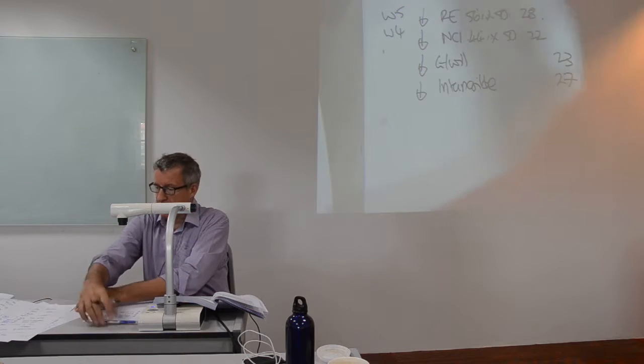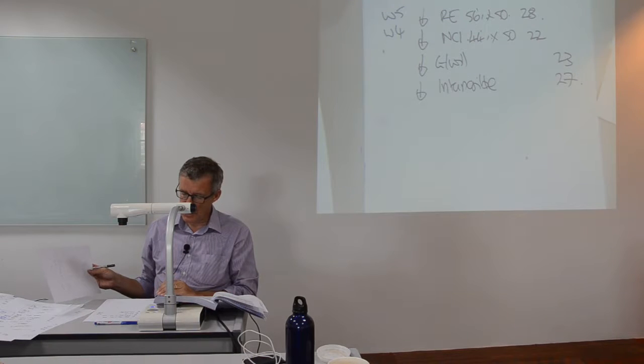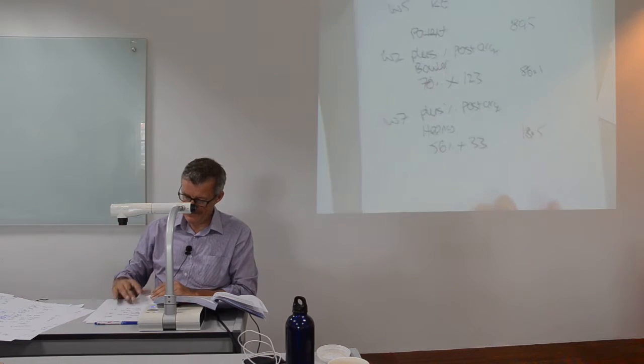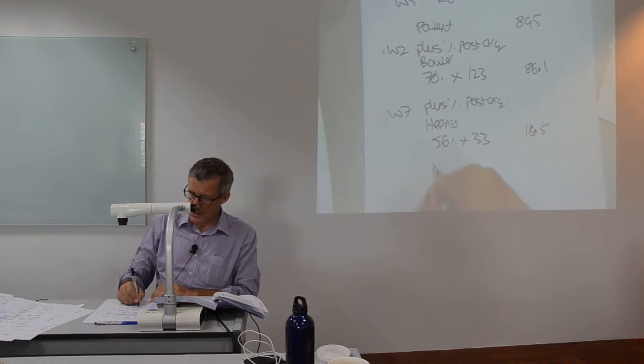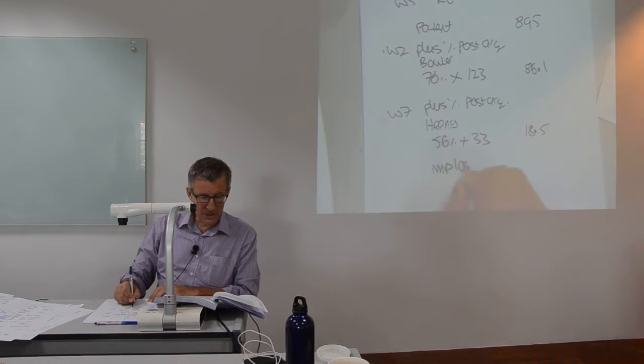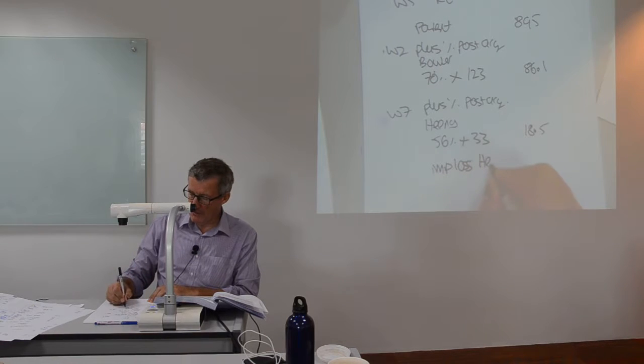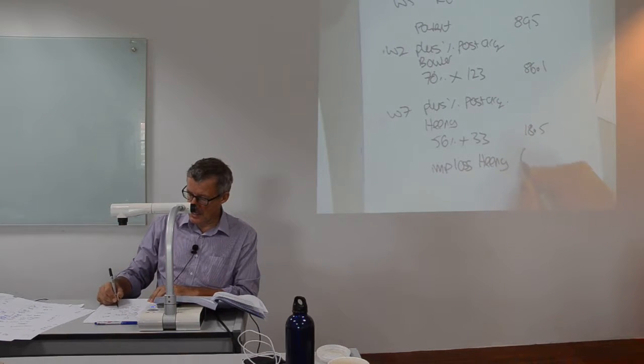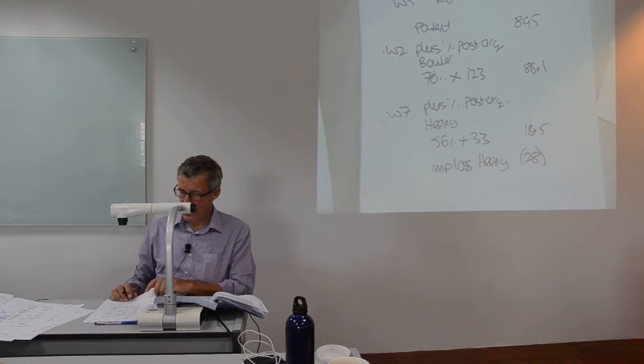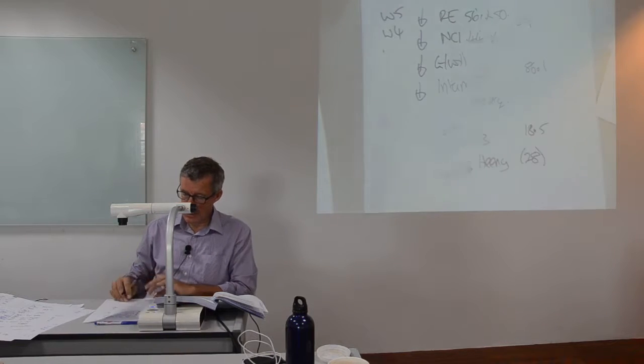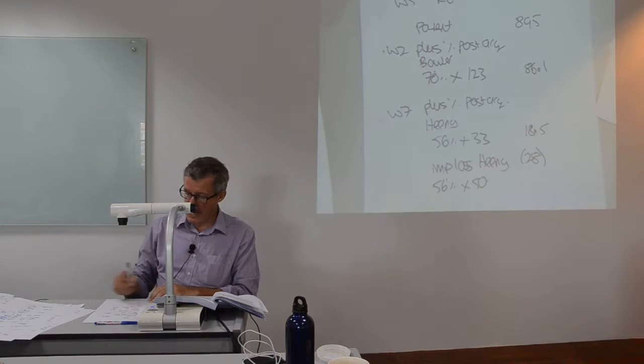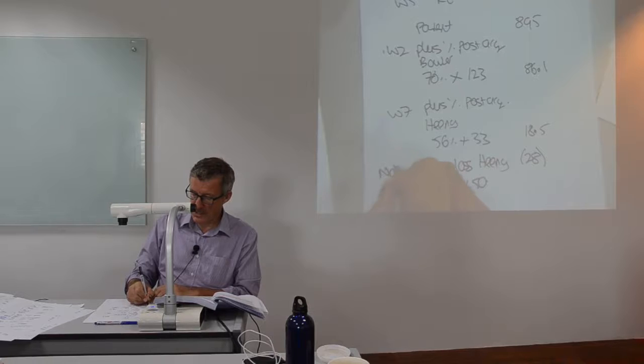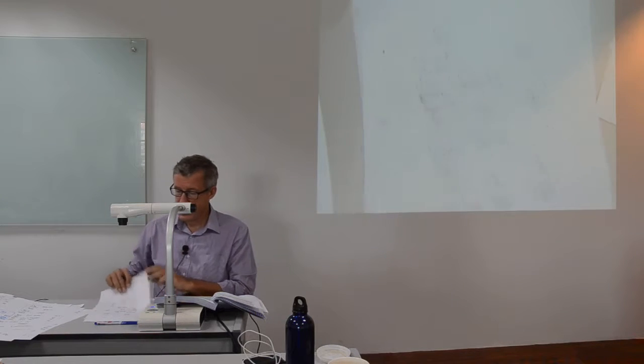In my retained earnings, I have an impairment loss of 28. This is the impairment loss in respect to the second sub of Keeney, and this is 28. If you want that impairment loss calculated, that's 56% of 50. And that comes from effectively note number three.